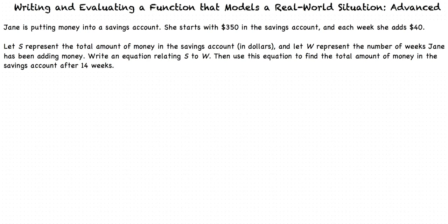That's a lot of information. How do we make sense of it all? We see that S represents the total amount of money in the savings account. Since our goal is to find the total amount of money in the savings account after 14 weeks, we will want to solve for S. So we write S by itself on the left side of our equation.